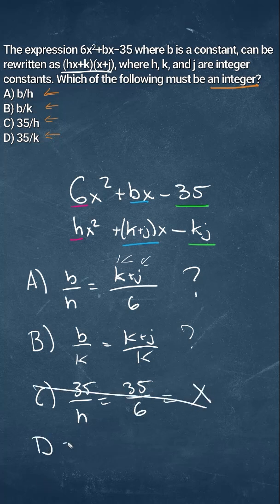D is going to be equal to 35/k, and we know that 35 is the same as kj. Well, that would simplify to just j, and given that j is an integer, it would have to be this, so D would be the final answer.